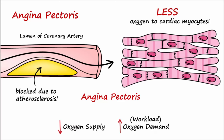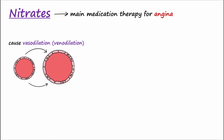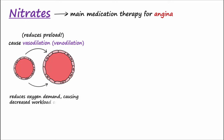The medication therapy used for angina will either increase oxygen supply to the heart or decrease the oxygen demand by the heart. Nitrates are the mainstay for medication therapy for angina. They act to cause vasodilation, especially venodilation, which results in reduced preload and decreased workload on the heart by reducing oxygen demand.